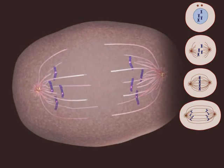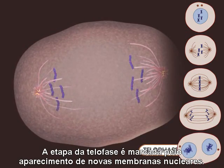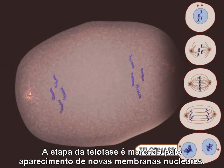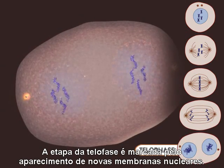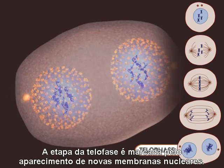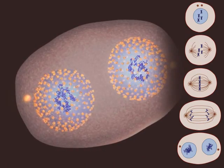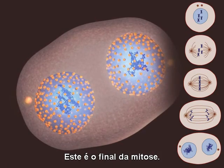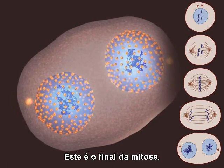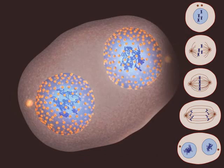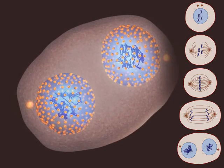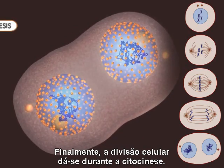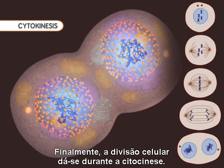The telophase stage is marked by the appearance of new nuclear membranes. This is the end of mitosis. Finally, the splitting of the cell occurs during cytokinesis.